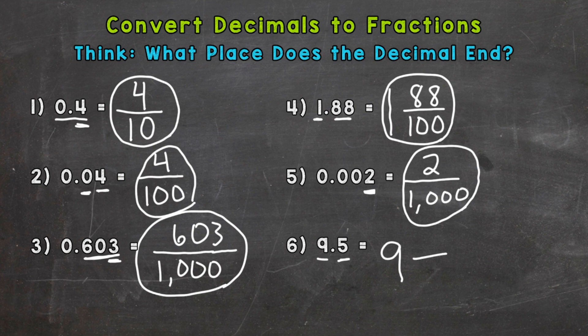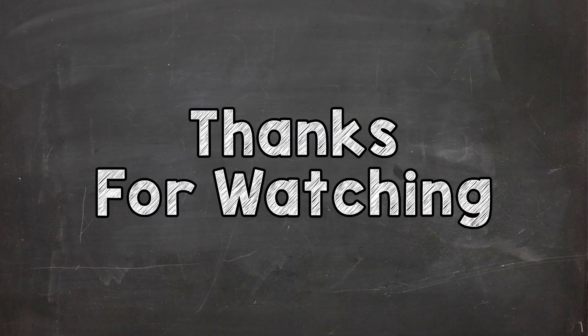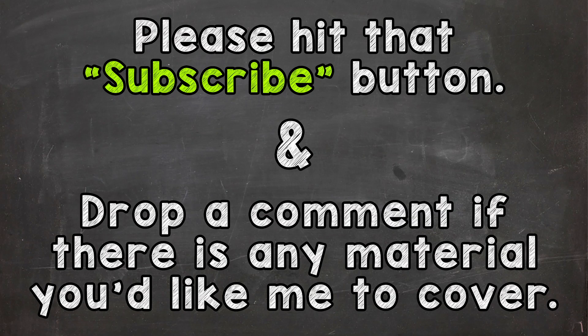Number six is another mixed number where we have a whole nine. The decimal portion ends in the tenths, so that's our denominator and we have a numerator of five — so nine and five tenths. There we have it: converting decimals to fractions. I hope that helped, thanks so much for watching, until next time, peace.